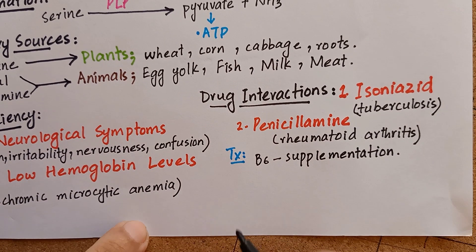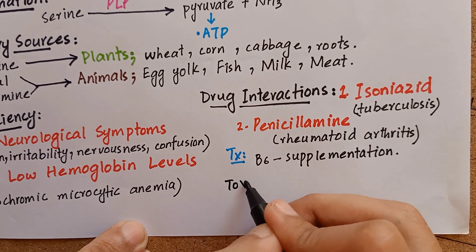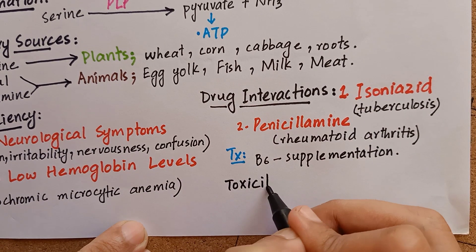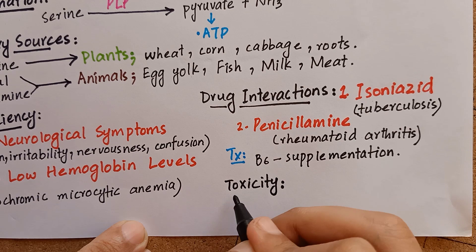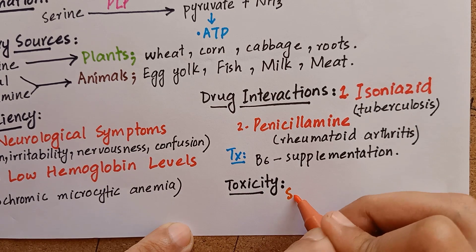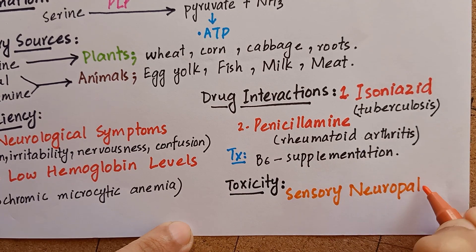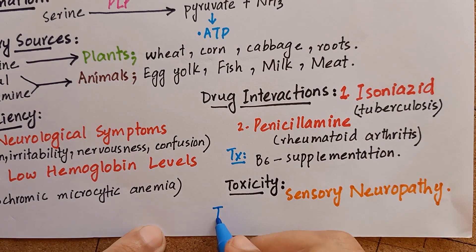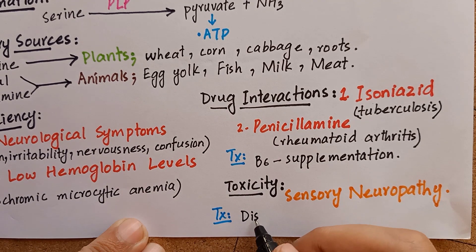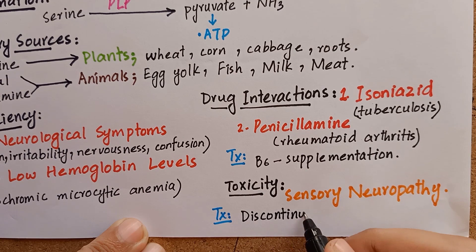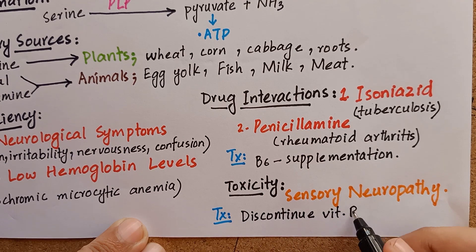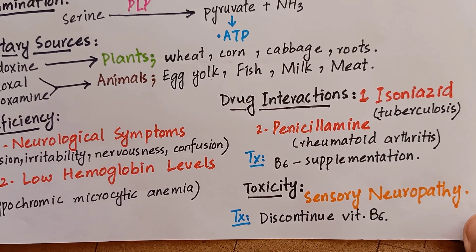Vitamin B6 is the only water-soluble vitamin with significant toxicity, manifesting as sensory neuropathy. Significant improvement occurs when the vitamin is discontinued.